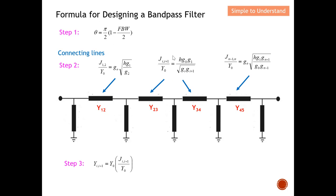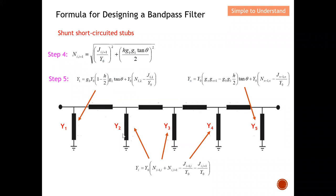For the shunt short circuit stubs in step five, the same structure applies. One formula is for the first stub, another for the last stub, and a general formula covers all stubs in between the first and last. You need to be careful to use the correct formula depending on whether you are calculating the first, last, or intermediate stub.